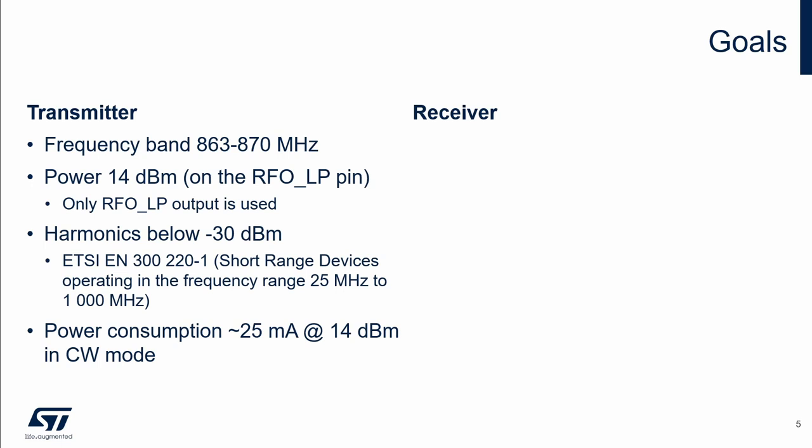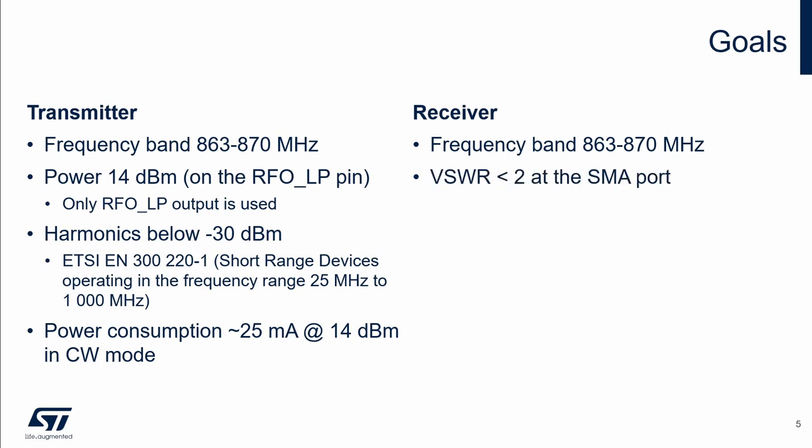Concerning the receiver, our goals are: the same frequency band as the transmitter, good matching — the standing wave ratio should be below 2 at the SMA port — and the receiver sensitivity for the selected modulation should be according to the datasheet.